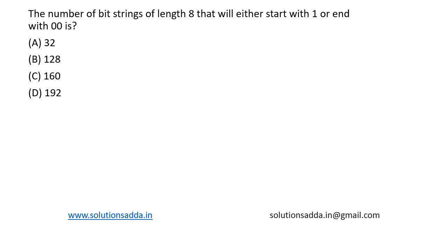This is a question from discrete mathematics. The number of bit strings of length 8 that will either start with 1 or end with 00. The basic formula to find this is A union B equals mod A plus mod B minus mod A intersection B. Let's try to solve this.